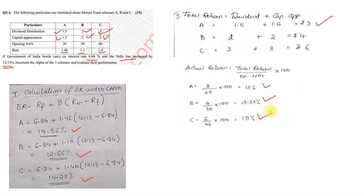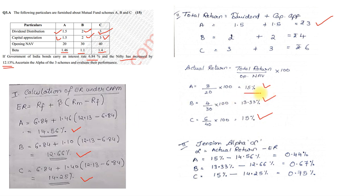Once we get that, last step, where we actually need to find the alpha, so Jensen's alpha, the formula is actual return minus expected return. So, actual was 15, expected was 14.56, so 15 minus 14.56, we got it at 0.44. 13.33 minus 12.66, we got it at 0.67, and 15 minus 14.25, we got it at 0.75%.